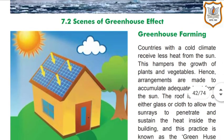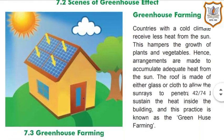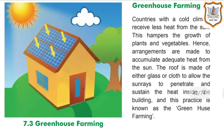Now let us discuss greenhouse farming. Countries with a cool climate receive less heat from the sun, which hampers the growth of plants and vegetables. Hence, arrangements are made to accumulate adequate heat. The roof is made of either glass or cloth to allow sun rays to penetrate and sustain the heat inside the building. This practice is known as greenhouse farming.